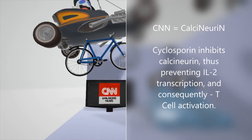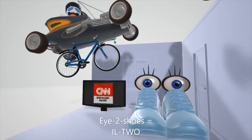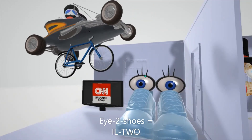We can remember this IL-2 transcription because we have these shoes over here — I-2 shoe. There are two I's over here with the shoes, I-2 shoe for IL-2 transcription. So again, cyclosporine is important for inhibiting calcineurin, which prevents IL-2 transcription, which leads to blockage of T cell activation.